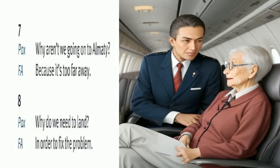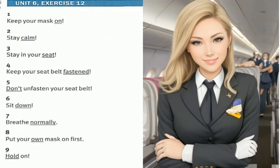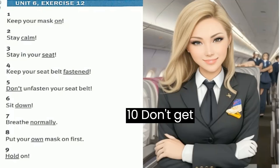Unit 6, Exercise 12. Keep your mask on. Stay calm. Stay in your seat. Keep your seat belt fastened. Don't unfasten your seat belt. Sit down. Breathe normally. Put your own mask on first. Hold on. Don't get up.